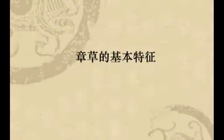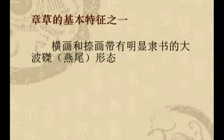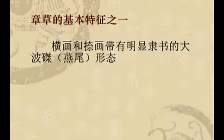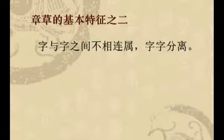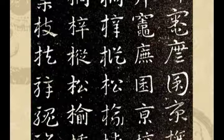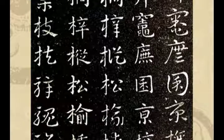第二种：章草。在有章草的时候其实还没有章草的名称，那是后来出现今草了以后，为了跟它区别才命名了章草，名称在后，字体在前。章草有几个特征：第一点是横画捺画带有明显的隶书大波磔的形态，就是我们所谓的燕尾。第二点是字与字之间不相连，一个是一个，还保持着正书的排列方式。